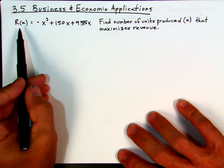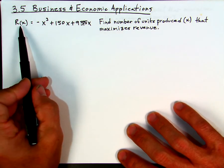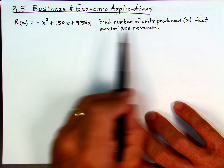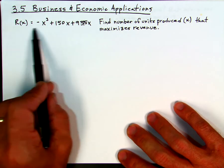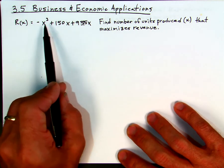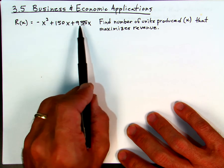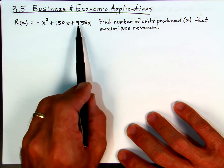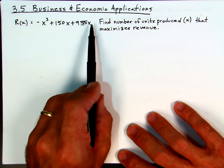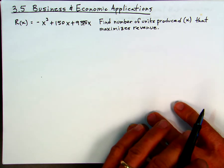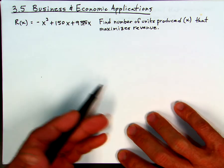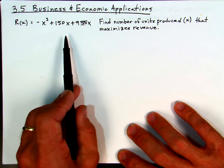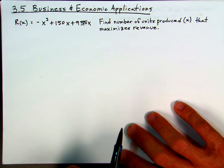For this first example, we're looking at a revenue function. Revenue is a function of the number of units produced. So if our revenue function looks like this — negative x cubed plus 150x squared plus 9,375x — then what we'd like to know is how many units should we produce to maximize the revenue.